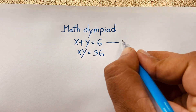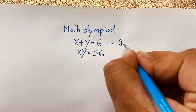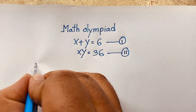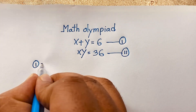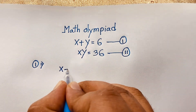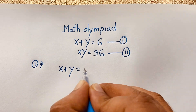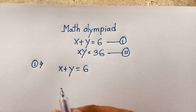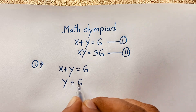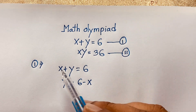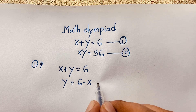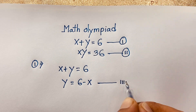This is our first equation and this is our second equation. According to the first equation, x plus y is equal to 6. We can derive that y is equal to 6 minus x. This gives us our third equation.